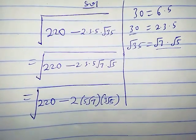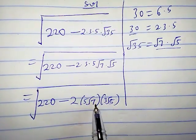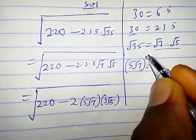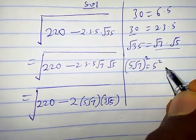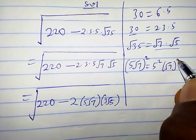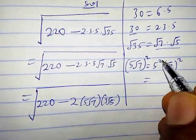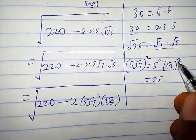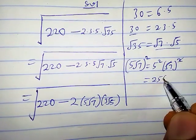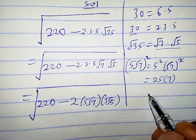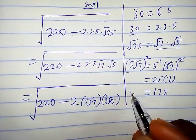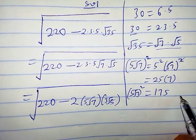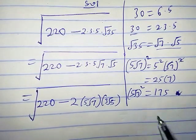Now let's observe the term 5 root 7. We square it: (5√7)² equals 5² times (√7)², which gives 25 times 7, that is 175. So (5√7)² equals 175. Let's take note of this result and call it star.